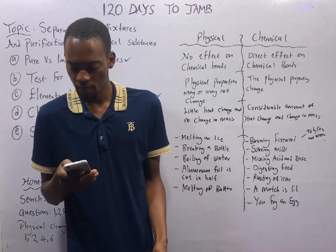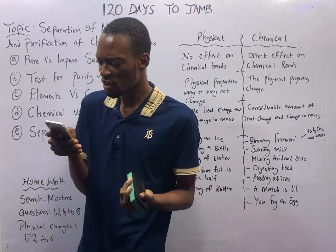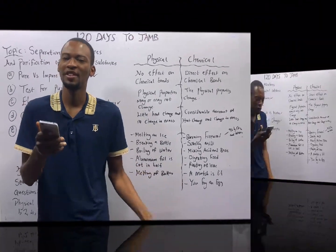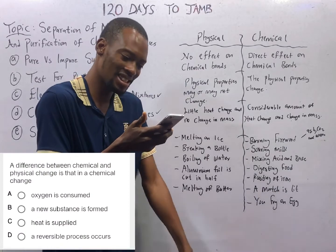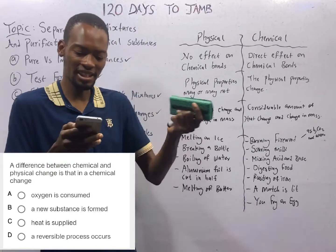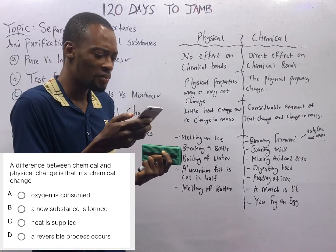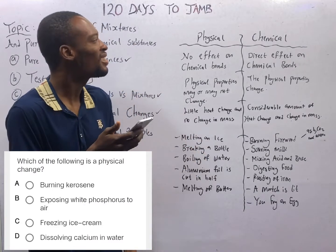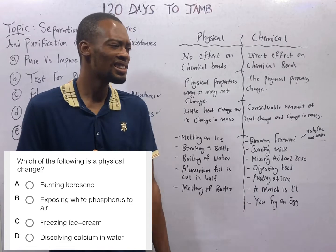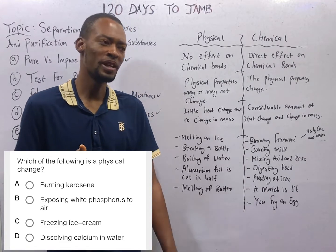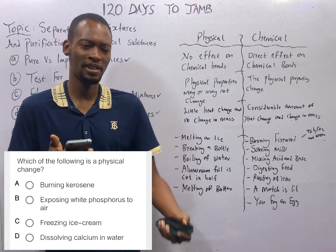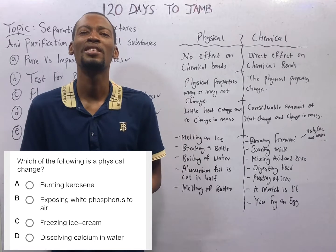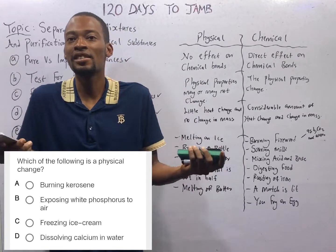The questions for this class are from the Flash Nenas JAM application. The first question: a difference between chemical and physical change is that in a chemical change, a new substance is formed. That is correct. The second question: which of the following is a physical change? Option A — burning of kerosene. Burning of kerosene involves a large amount of heat, is not easily reversible, and a new substance is formed, so it is a chemical change. Option B — exposing white phosphorus to air. Phosphorus is very reactive; when exposed to air it will catch fire, therefore that is also a chemical change.